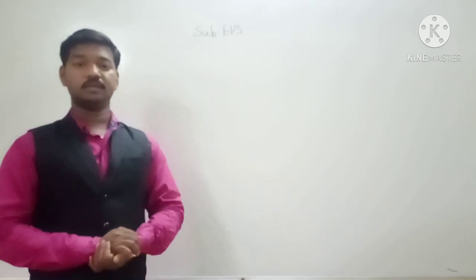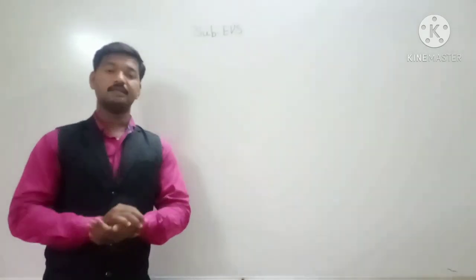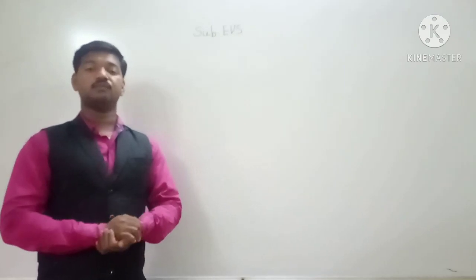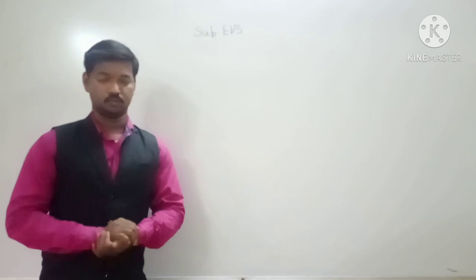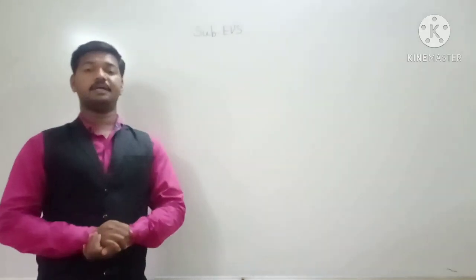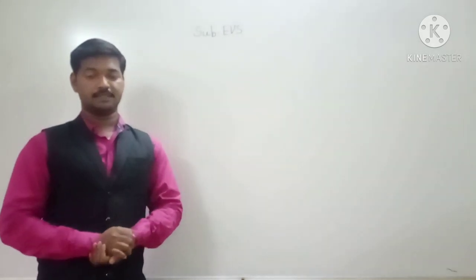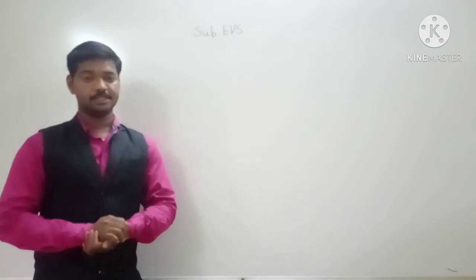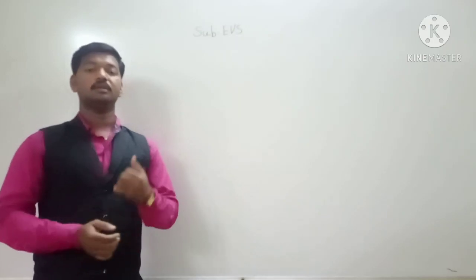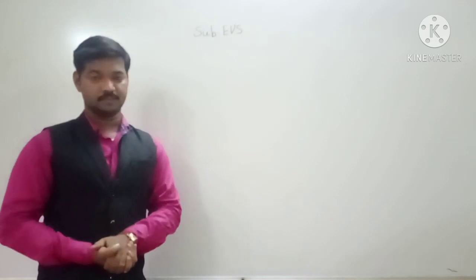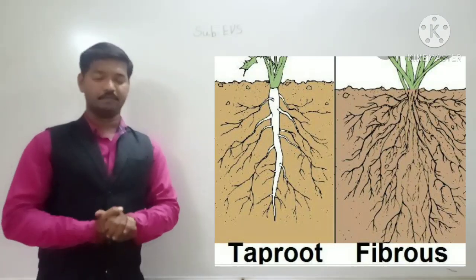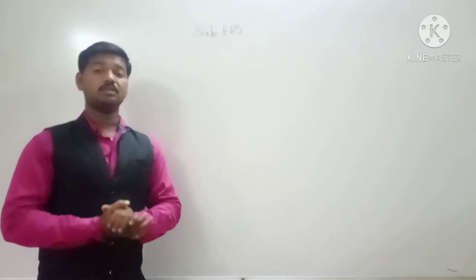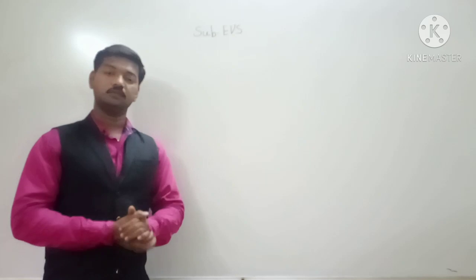So what have we learned today? We have learned that, like us, plants are also living things. They need air, water, and food to live and grow. Plants are mainly divided into two parts: shoot and root. Today we have learned about two types of roots — taproot and fibrous root. We have also seen what is the work of roots.